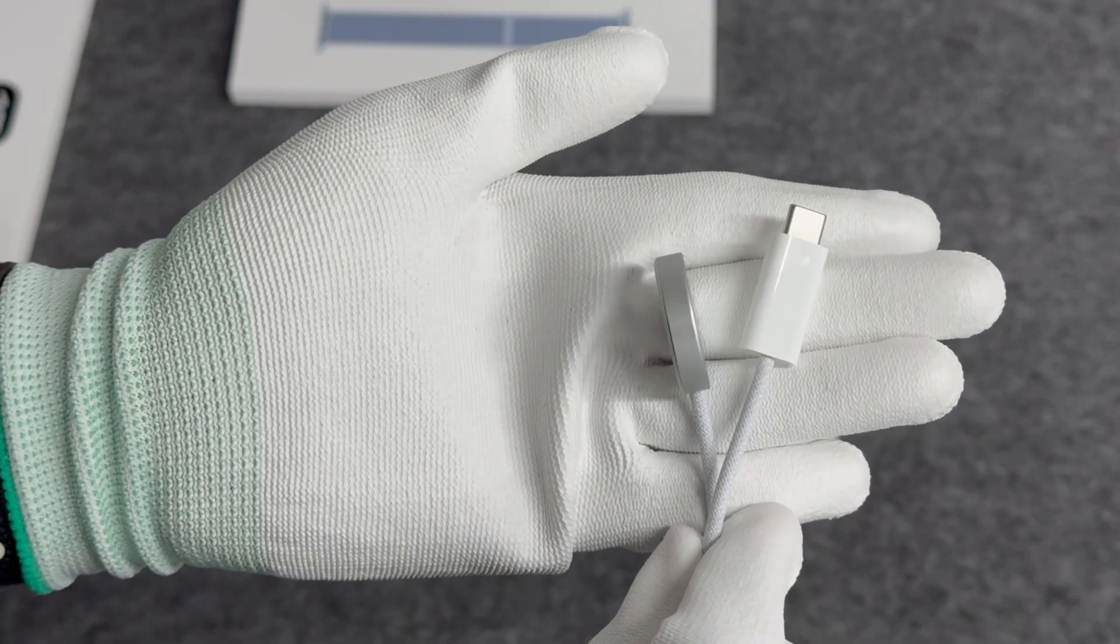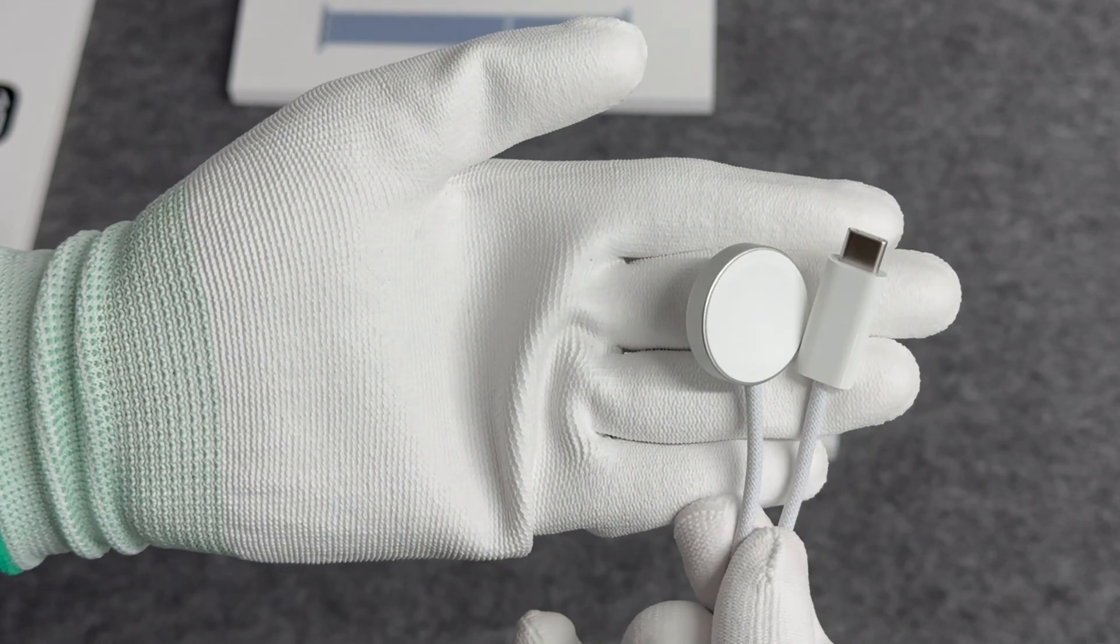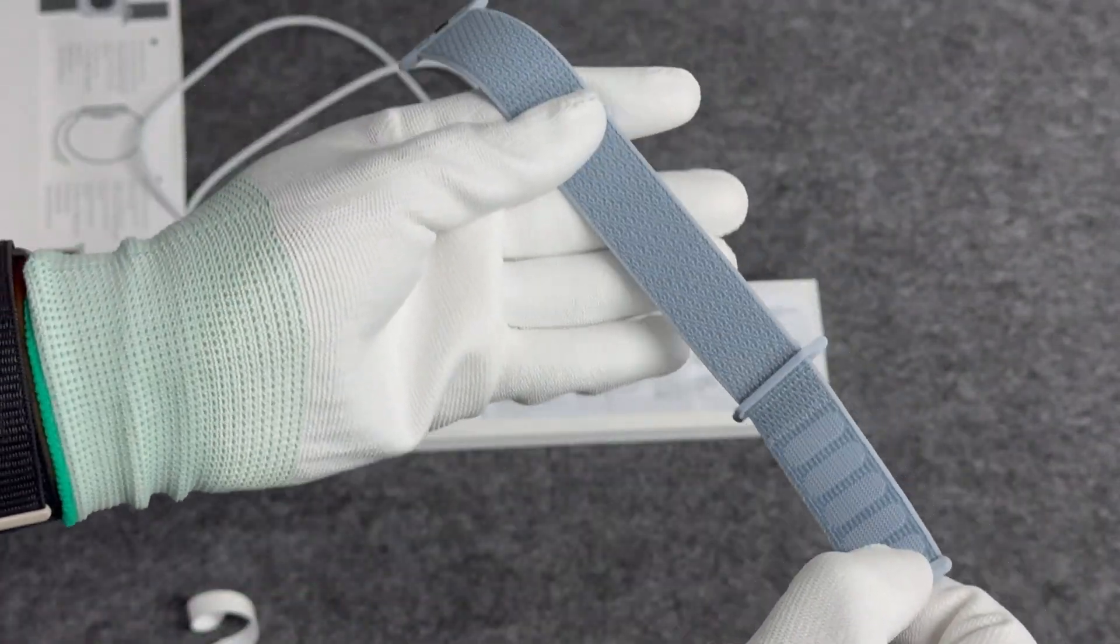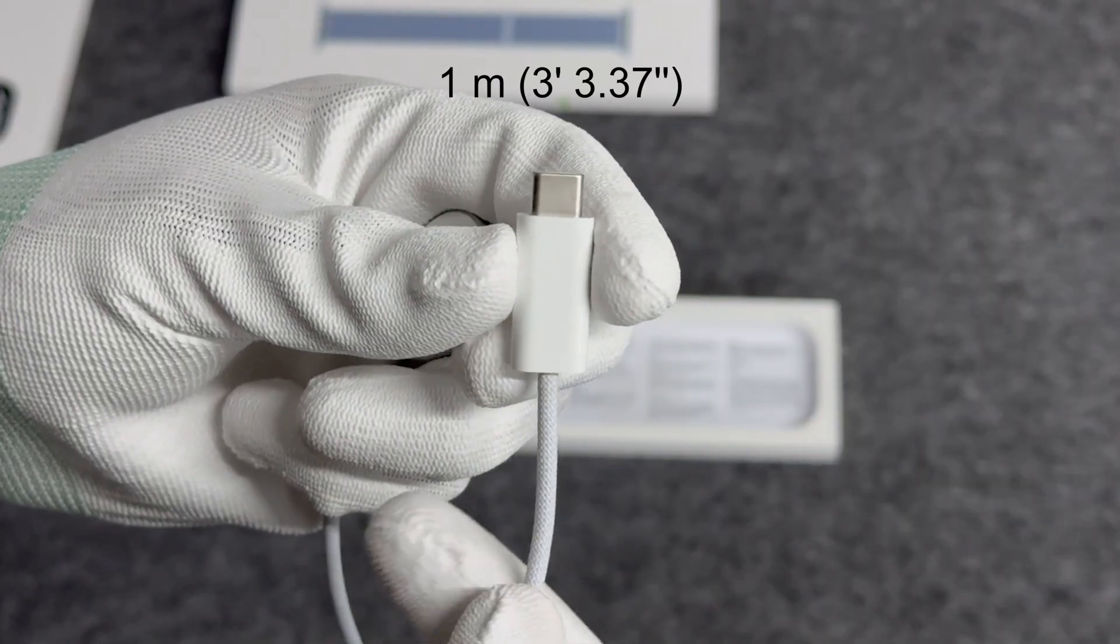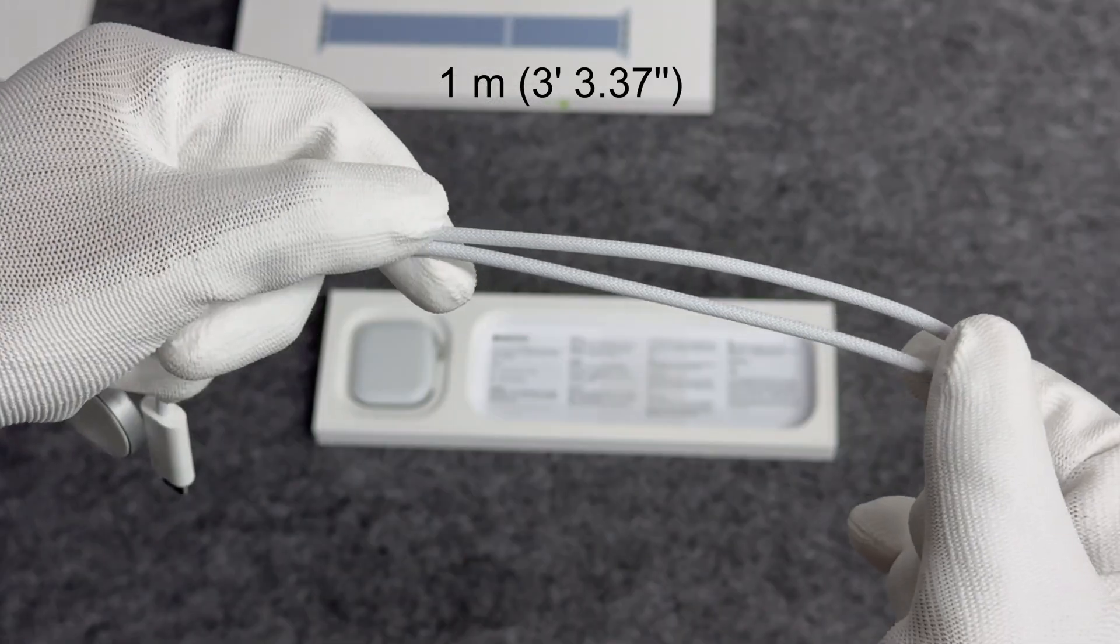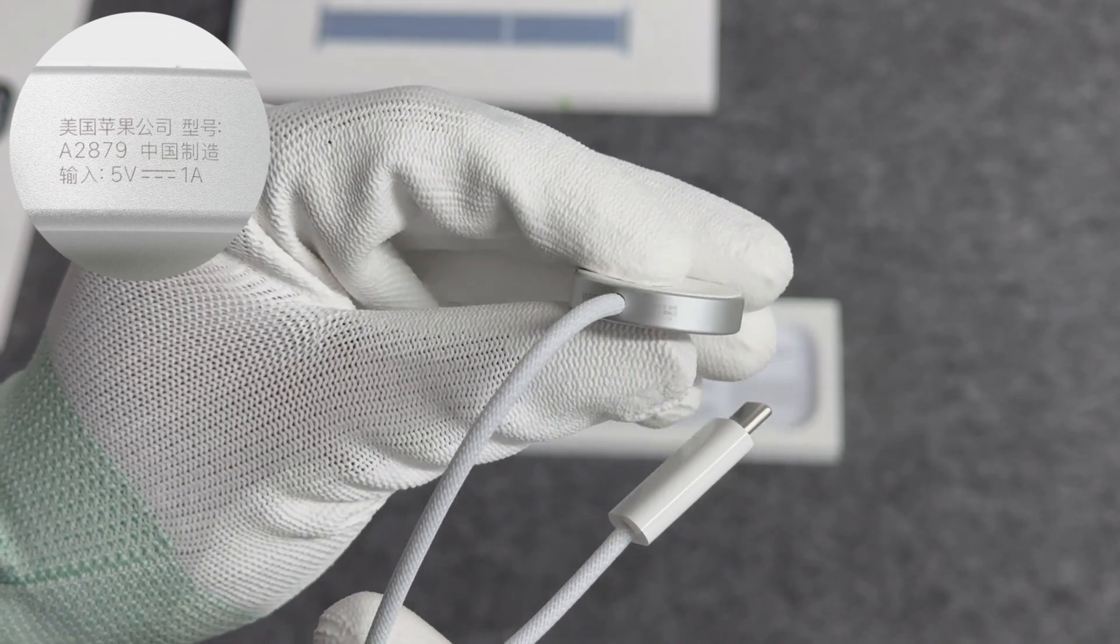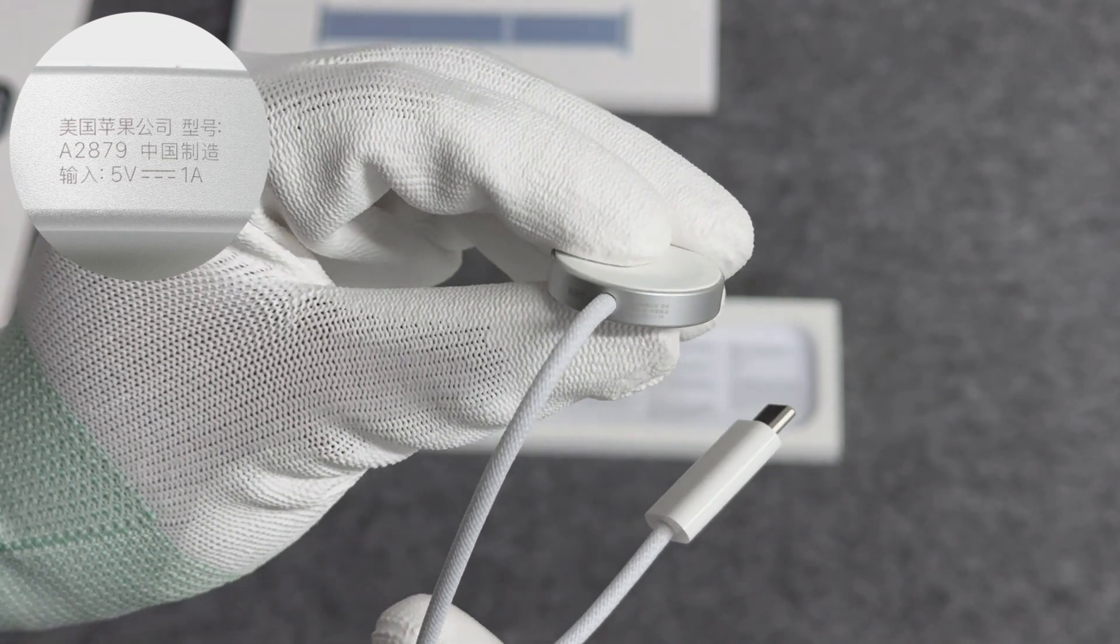It still comes with a USB-C magnetic charging cable. The woven nylon strap is made from 100% recycled material. The length of the cable is about 1 meter. Model is A2879. It can support the input of 5 volts 1 amp.